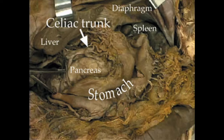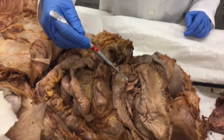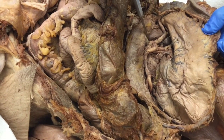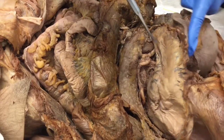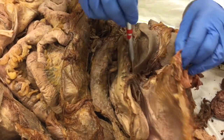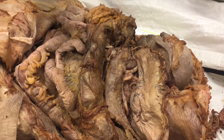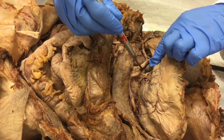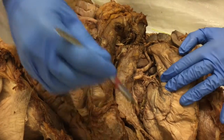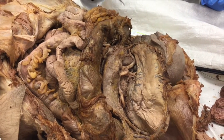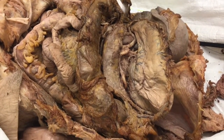We are hoping that by the end of this lecture, students will be able to know and identify the important branches as well as their distribution. The celiac trunk is a very short branch that comes off the abdominal aorta. It arises from the anterior surface immediately below the abdominal hiatus of the diaphragm and gives rise to three very important branches: the left gastric artery, the splenic artery, which supplies the spleen, and the common hepatic artery. These three branches are very important from a clinical point of view because they supply vital organs within the abdominal area.